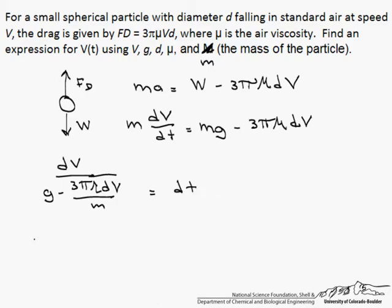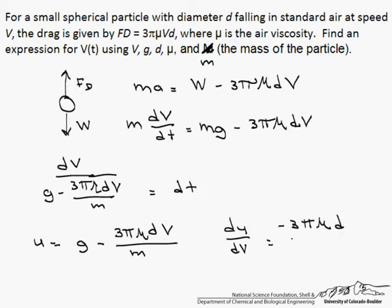The easiest way to do this is to let u equal that mess on the bottom, g minus 3 pi mu dv over m. Therefore, du dv equals minus 3 pi mu d over m.